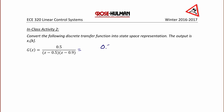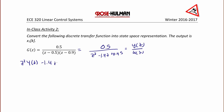That becomes 0.5 over z squared minus 1.4z plus 0.45, which equals the output Y of z over the input U of z. If I cross multiply, I get z squared Y of z minus 1.4z Y of z plus 0.45 Y of z,